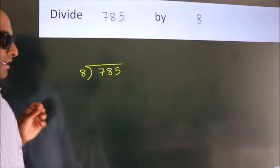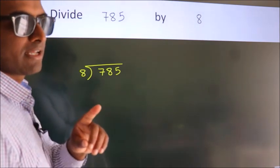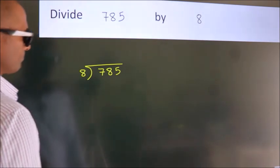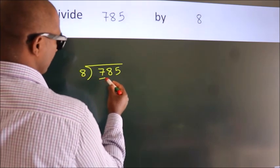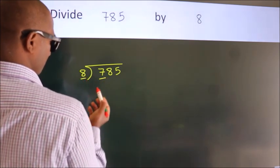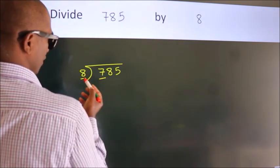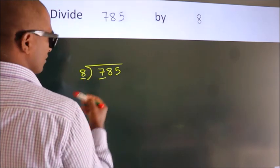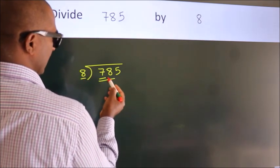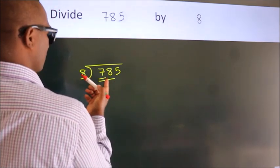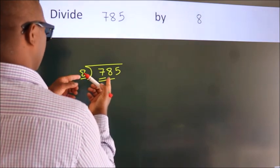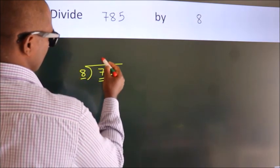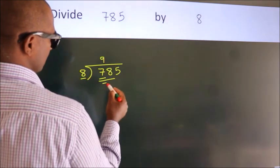This is your step 1. Next. Here we have 7, here 8. 7 is smaller than 8. So we should take 2 numbers, 78. A number close to 78 in 8 table is 8 nines, 72.